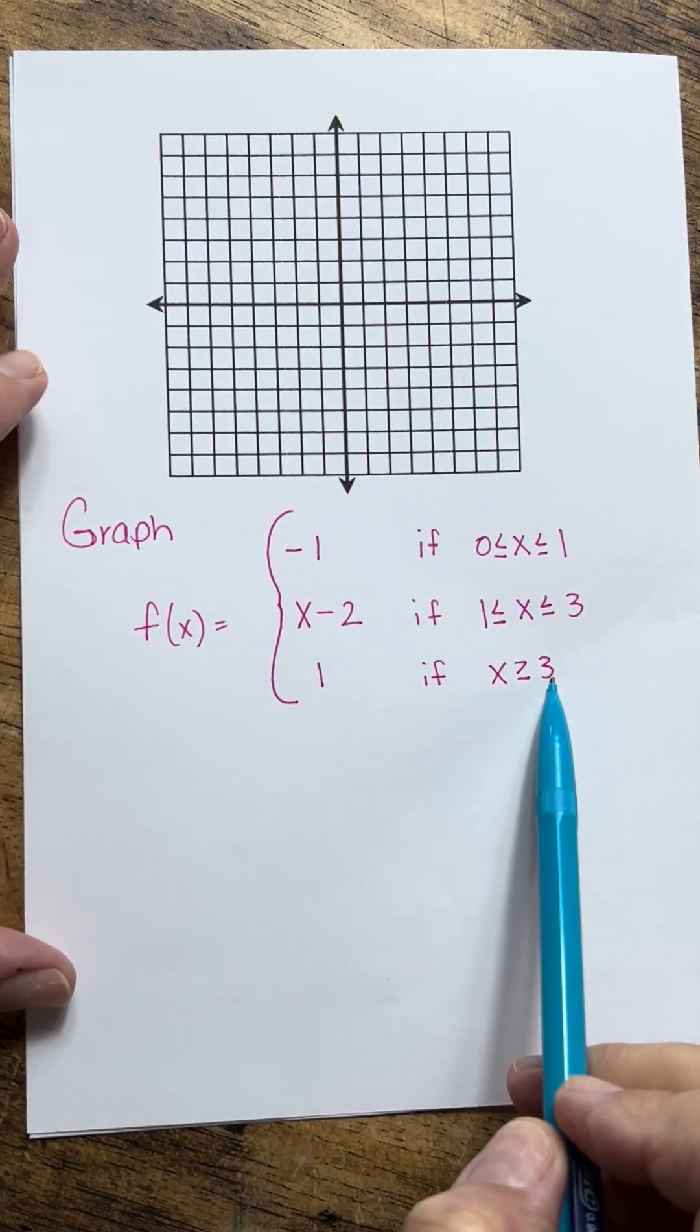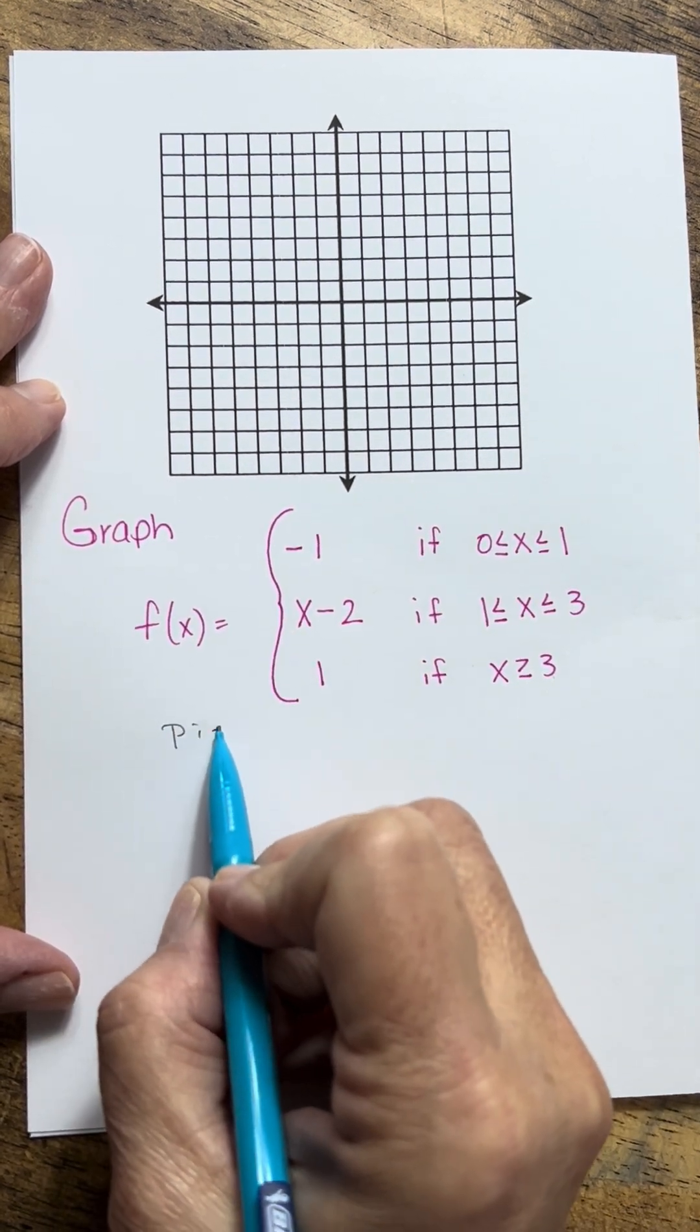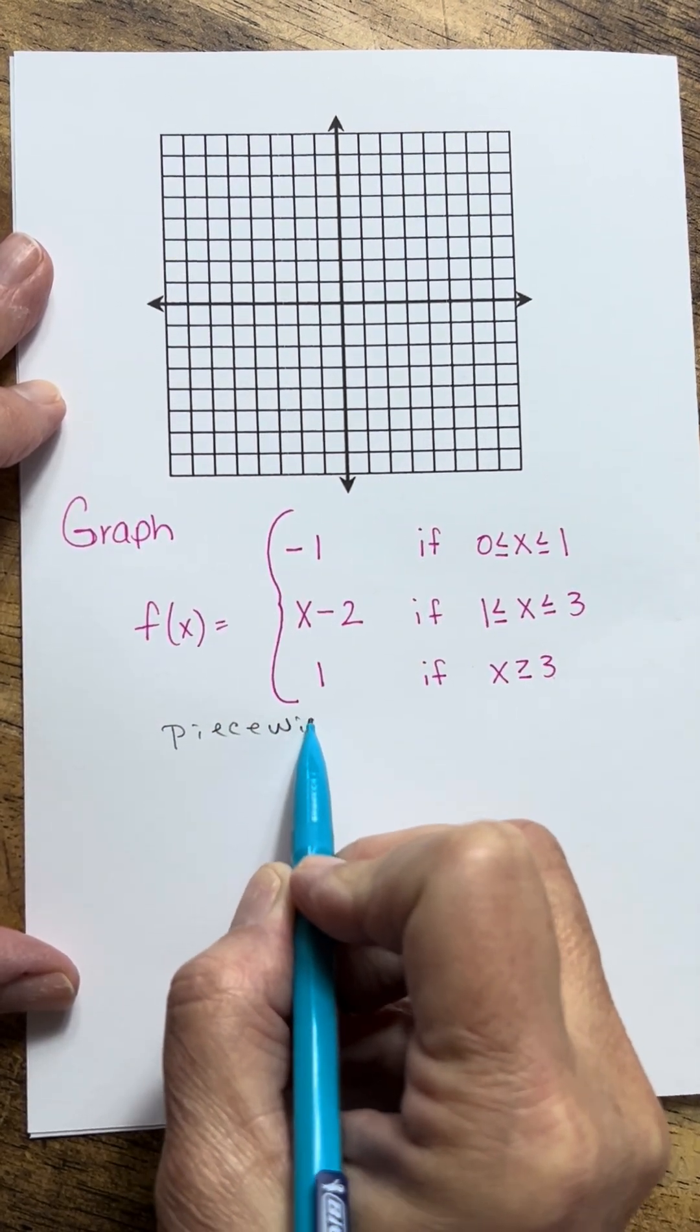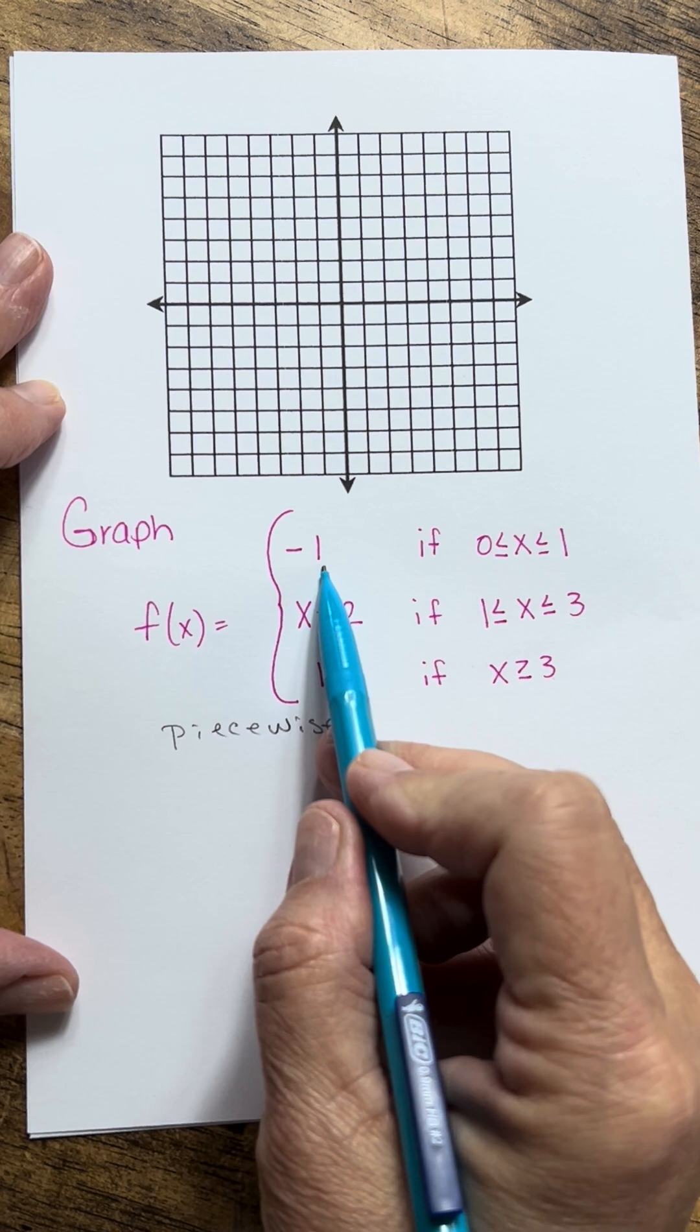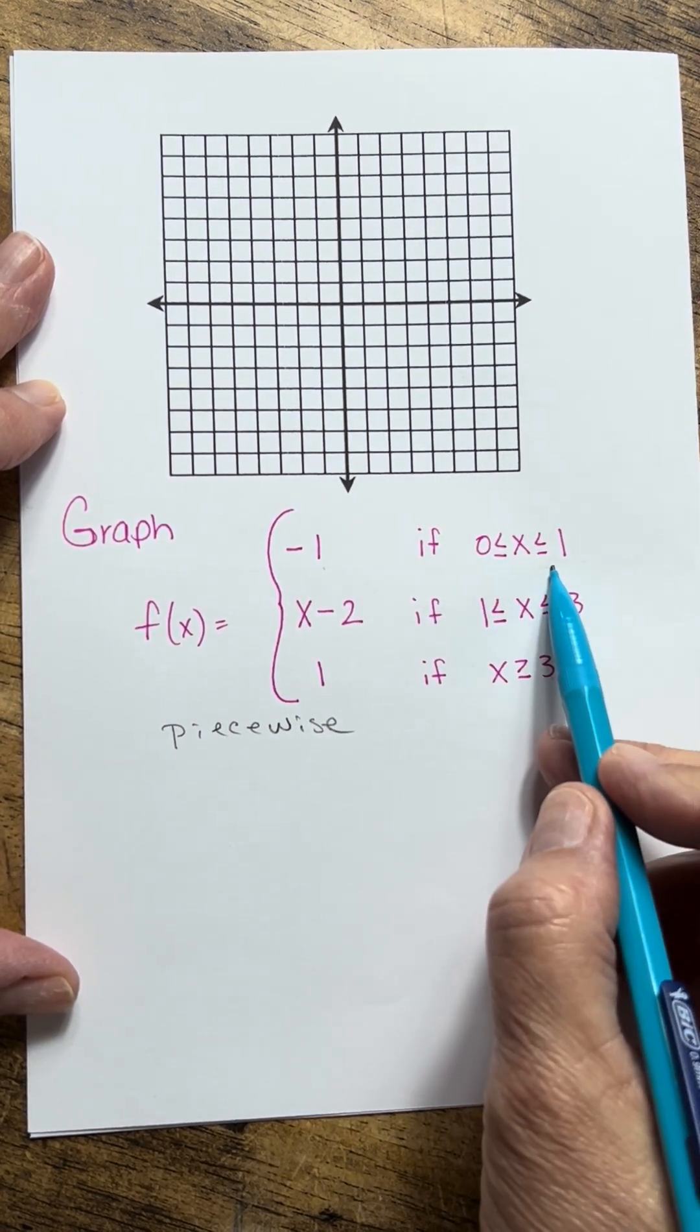We want to graph this function. Now this is what we call a piecewise function, and it's because we're just going to graph a piece of the function that is between, or that lives up to these restrictions.